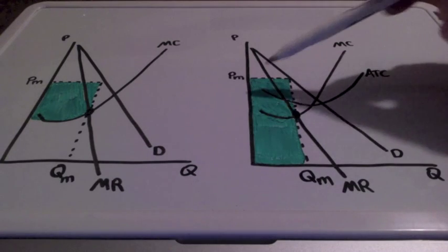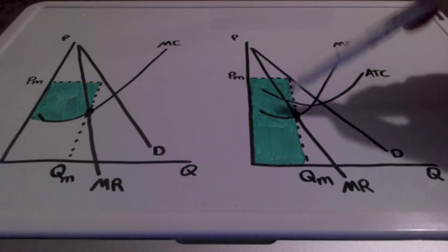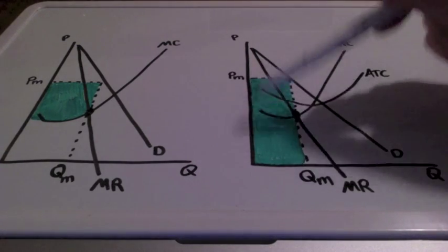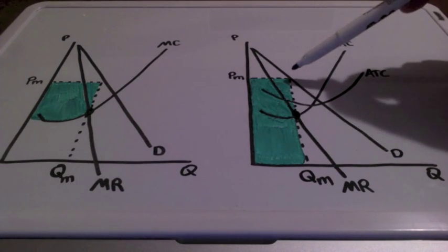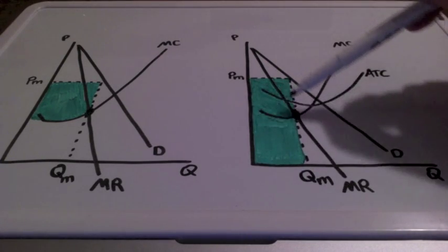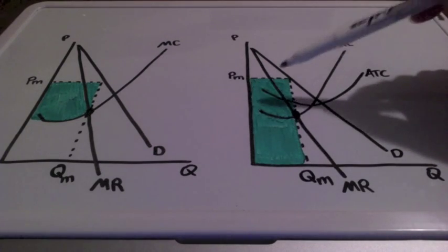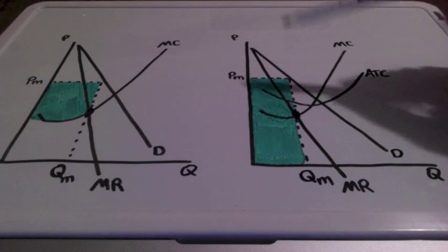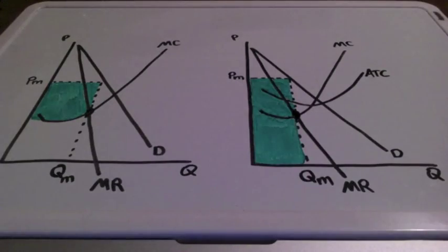So, we correctly identify this by shading this entire area in green. From price all the way down to our profit maximizing quantity, this represents the firm's total revenue. And the graph over here represents the firm's producer surplus.